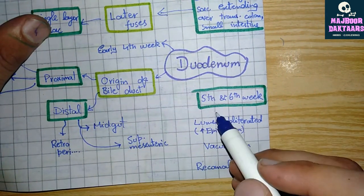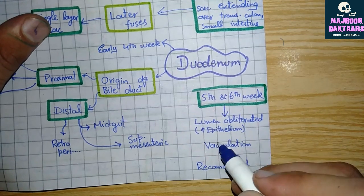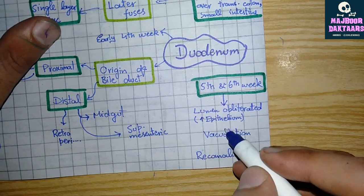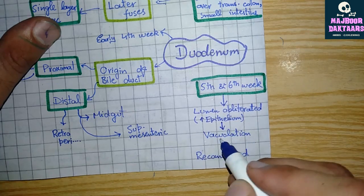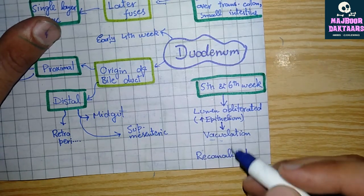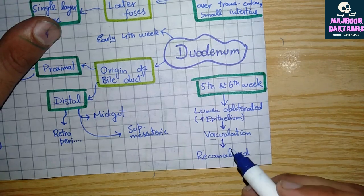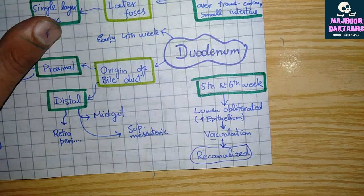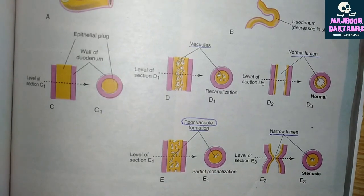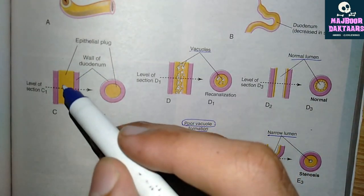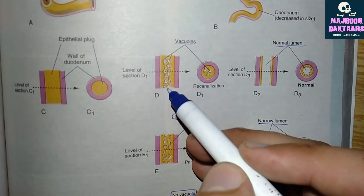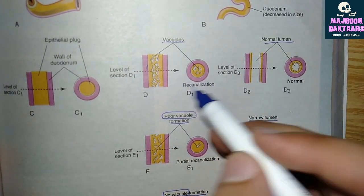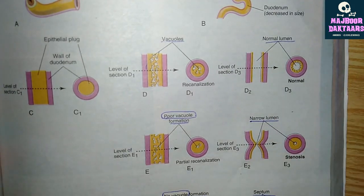During the fifth and sixth weeks, the lumen of the duodenum is obliterated due to proliferation of the epithelium. Vacuoles then develop in the epithelium, and when these vacuoles fuse and undergo apoptosis, re-canalization occurs and the normal lumen of the duodenum is restored.